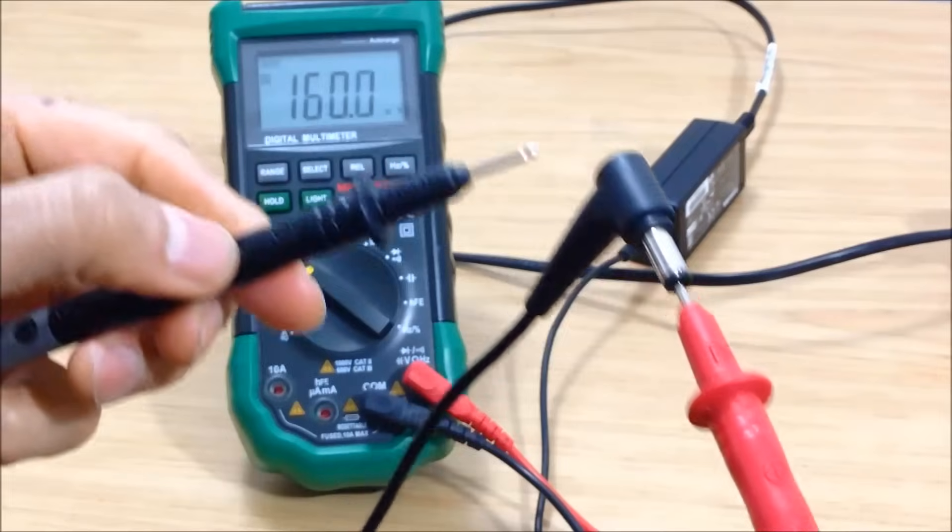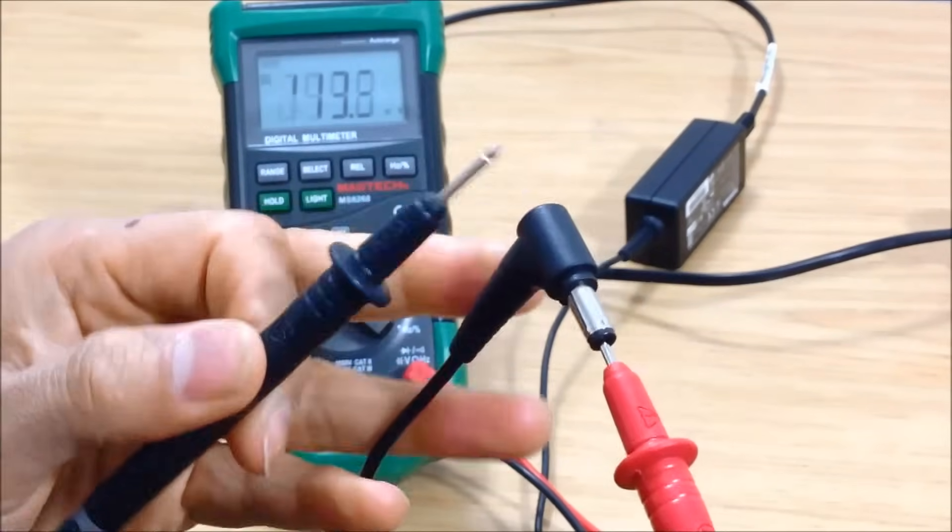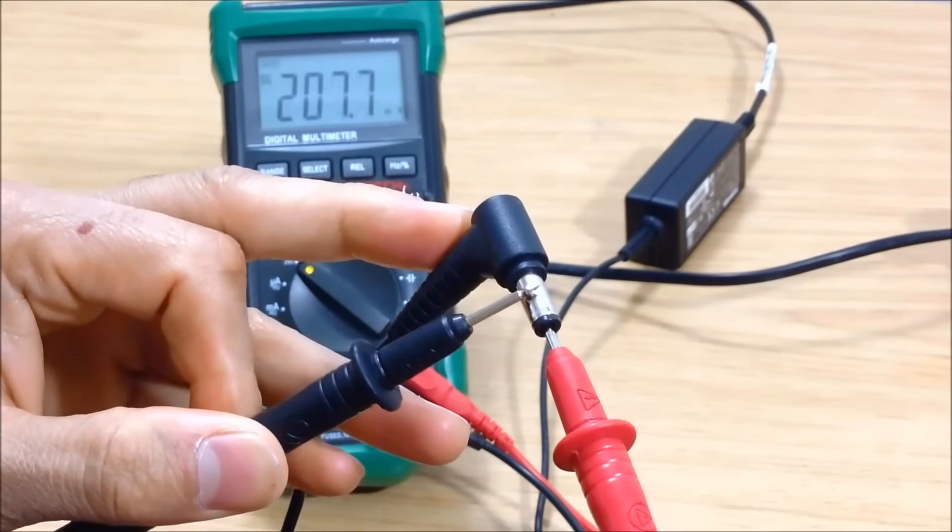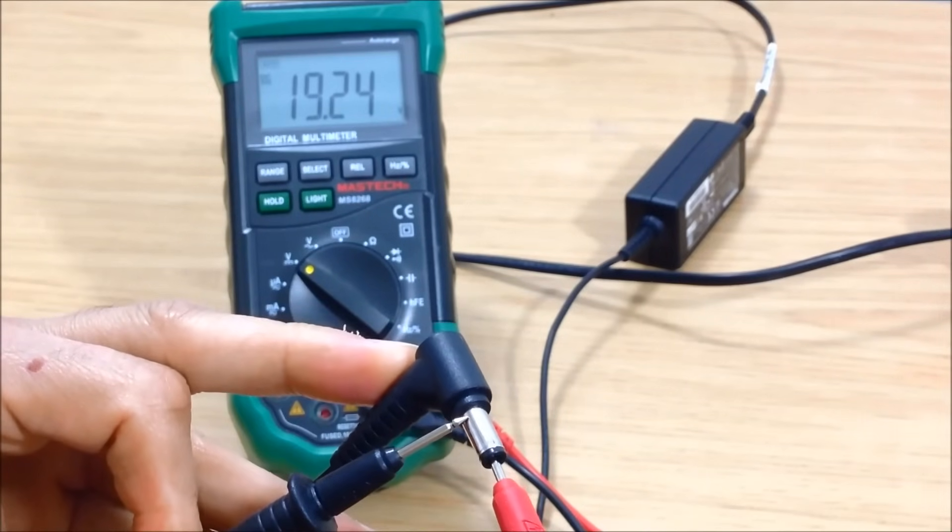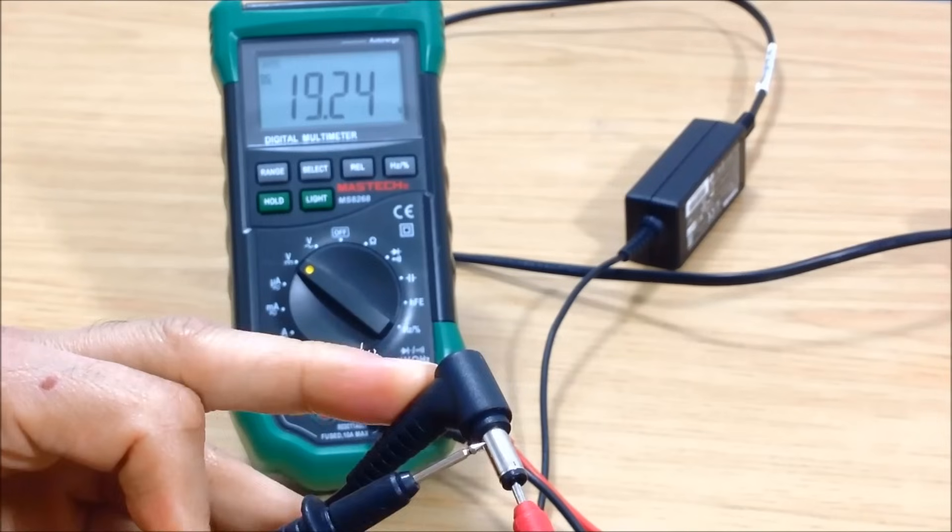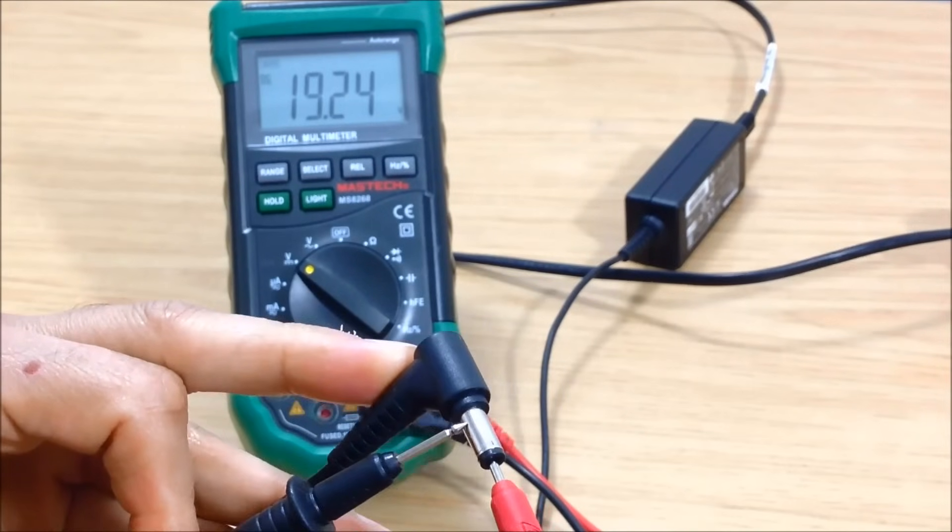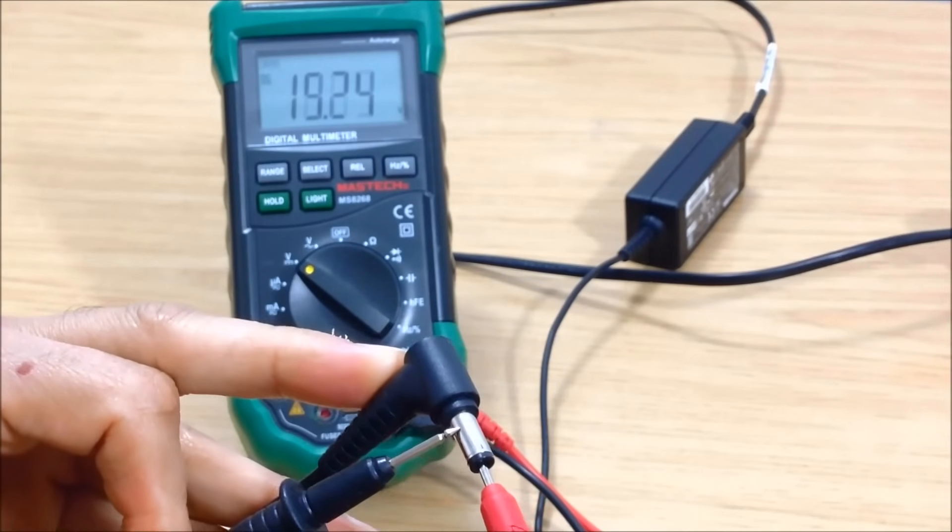And grab your black negative and place it on the outside of the edge. And as you can see on the multimeter, we have a reading of 19.24 volts, which is perfect, just within the margin of error. And that's how you do it.